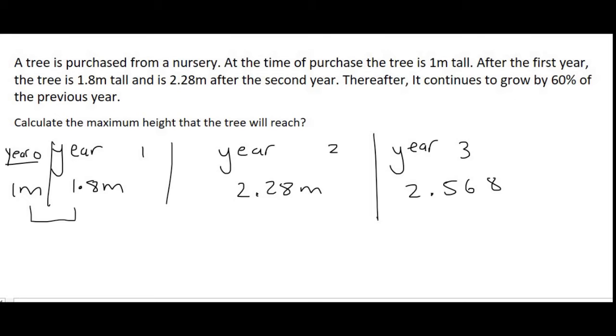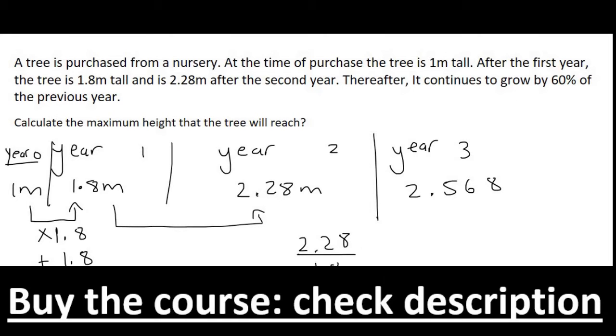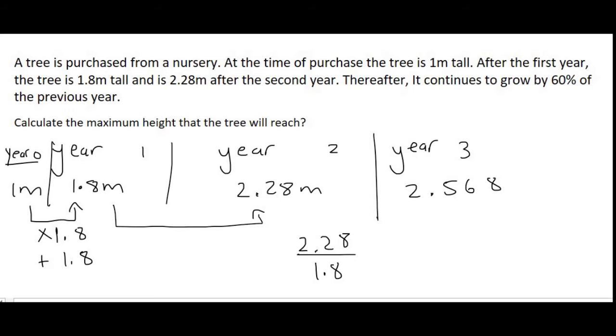And so now we would have to try and form a pattern. Well, to get from 1 to 1.8, you would have to multiply by 1.8, or you could add 1.8. Then to get from 1.8 to 2.28, well, if we say 2.28 divided by 1.8, that's going to give us a value of 1.27. Okay, so we have a bit of a problem, because now we're multiplying by 1.27. Or you might be saying, we could just be plussing 0.48. But now there's a bit of an issue, because none of those numbers match what we did in the previous one.